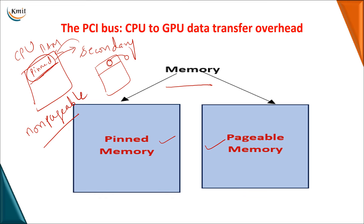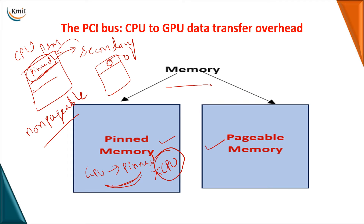The advantage of pinned memory is that the GPU can directly get data from it without CPU involvement — transfers from pinned memory to the GPU take place without the CPU. However, you must be cautious about how much of your RAM is used for pinned memory. If too much RAM is used for pinned memory, you cannot accommodate remaining processes, degrading multi-processing. It should not be too little either — depending on the application, you decide an appropriate size.